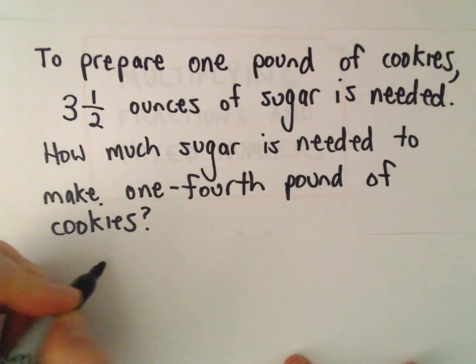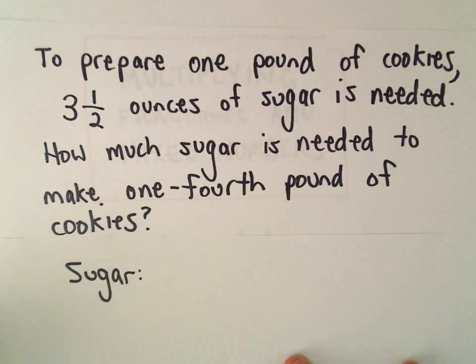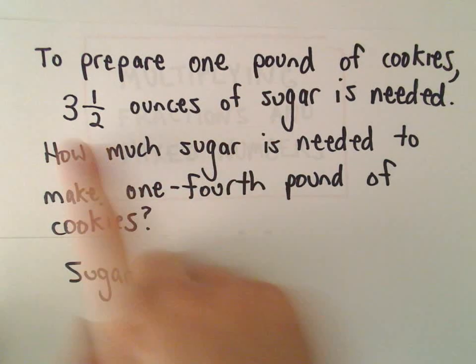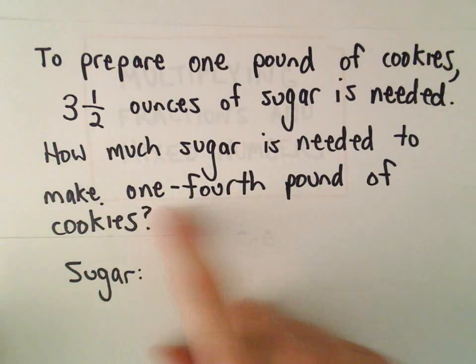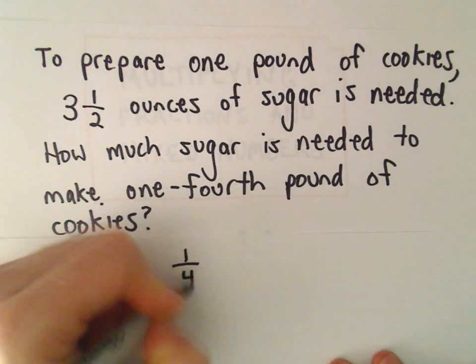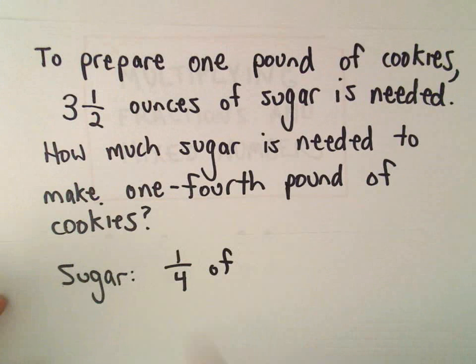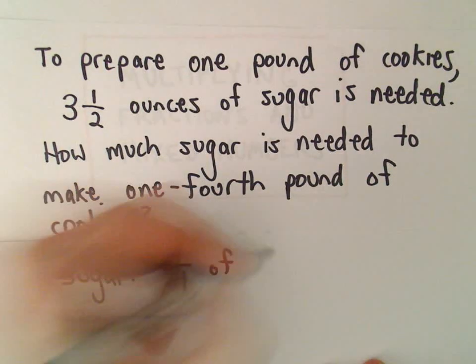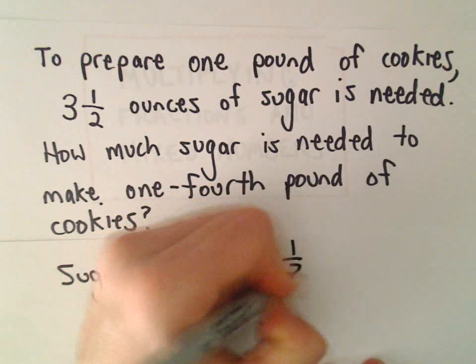The idea is what we're going to need in terms of sugar. So for one pound of cookies, we needed three and a half ounces. Well, now we're only going to need one fourth - we're only going to need one fourth of the original amount of sugar. So we're going to need a fourth of the three and a half ounces.